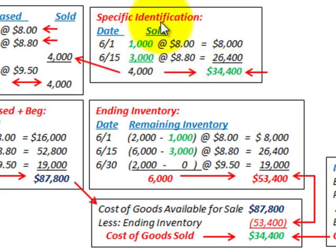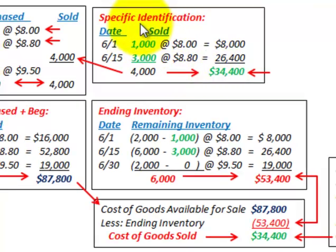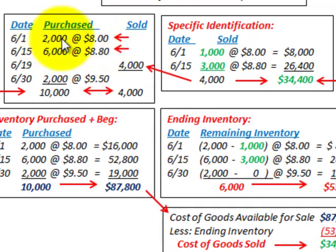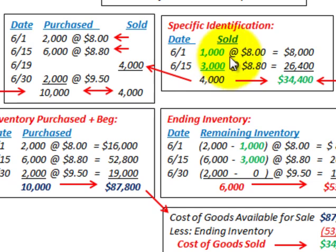To review: when using the specific identification method, you have inventory amounts at specified prices, and you simply pick which inventory items you want to sell at that specific price. Whatever remains is your ending inventory, and from that you calculate your cost of goods sold.